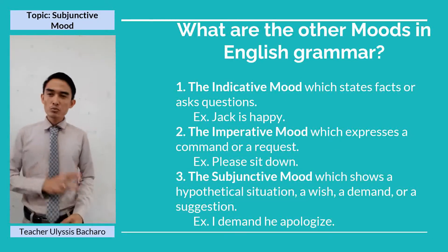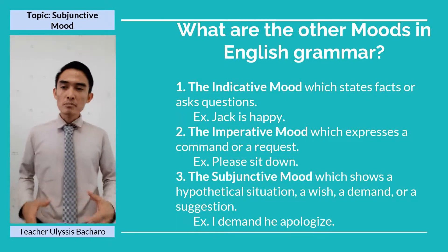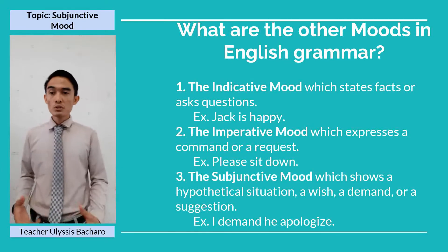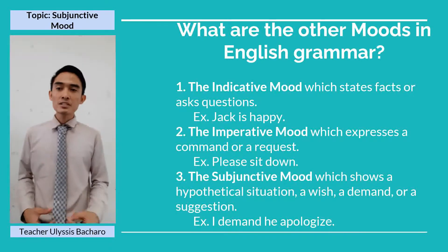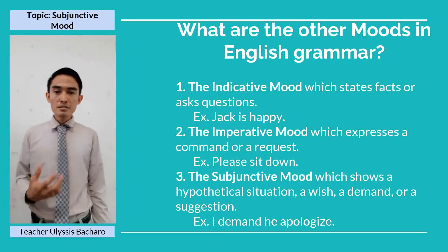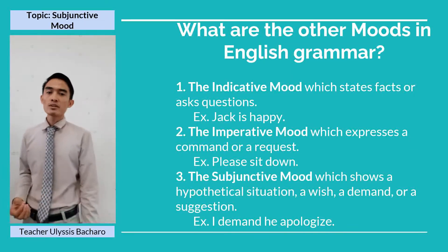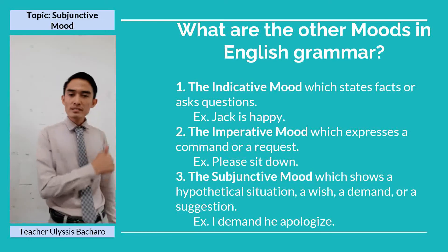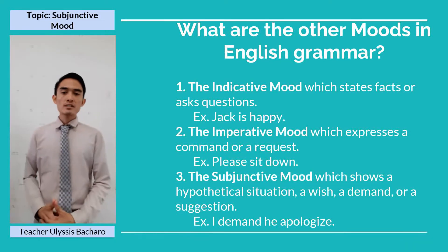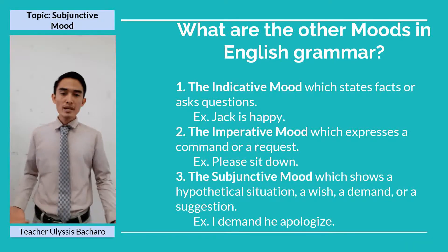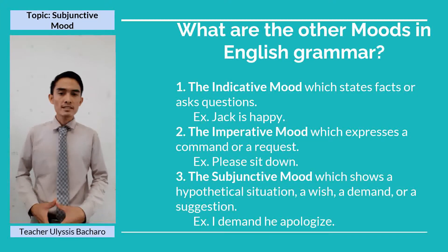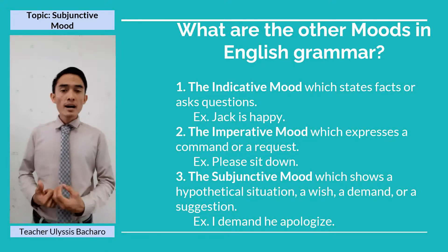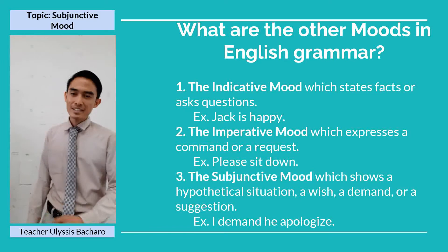The third one, which is our topic for today, is the subjunctive mood, which shows a hypothetical situation, a wish, a demand, or a suggestion. For example, 'I demand he apologize' — that's a demand. And for a wish, 'If I were you, I would say yes.'